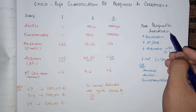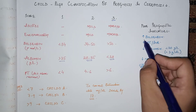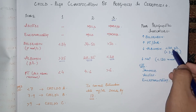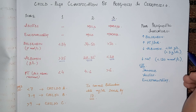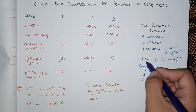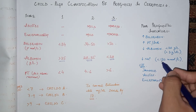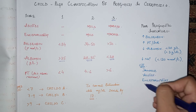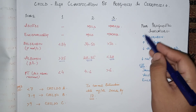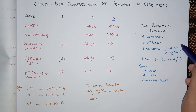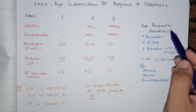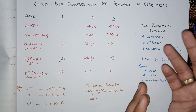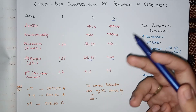Poor prognostic indicators in cirrhosis include high bilirubin, increased PT/INR, low albumin (especially below 3 g/dL), and hyponatremia below 120 mmol/L indicating hepatorenal failure. Clinically, the presence of jaundice, ascites, and encephalopathy all indicate a very poor prognosis, and such patients are candidates for liver transplant. Complications of cirrhosis will be discussed in upcoming videos.